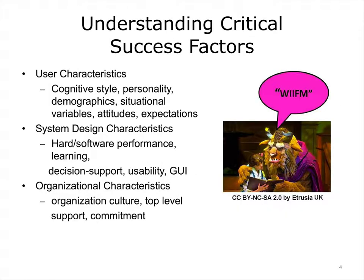There are many things that can make or break the adoption and installation of HIT. However, most of the critical success factors for implementation fall into one of three categories: user characteristics, system design characteristics, and organizational characteristics. These user characteristics are also called the people problem—individual differences like cognitive styles, personality, demographics, and situational variables. This aspect also includes users' expectations of what the system is going to do for them. We call those the WIFMs—W-I-I-F-M's—What's in it for me?